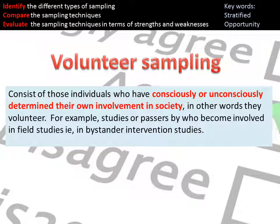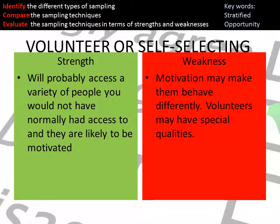Volunteer sampling is where individuals have consciously determined their own involvement — they have offered to participate. Milgram used a volunteer sample: he placed an advert in a newspaper and people volunteered to take part. This gives you access to a wider variety of people you might not otherwise have reached, and they tend to be motivated. However, that motivation may cause them to behave differently, and there may be something distinct about people who volunteer, which raises questions about whether results can be generalized.